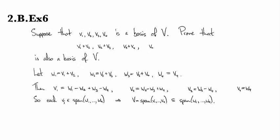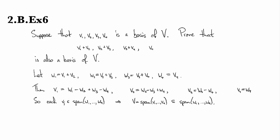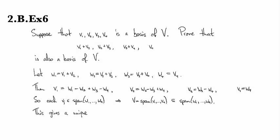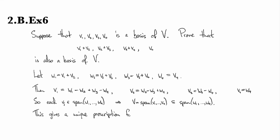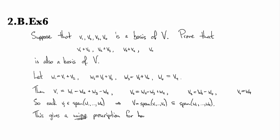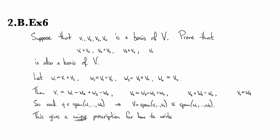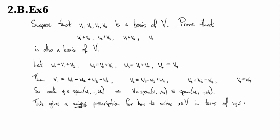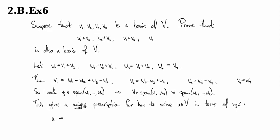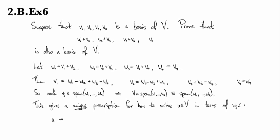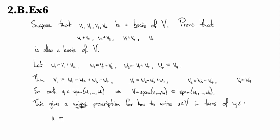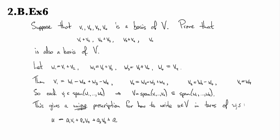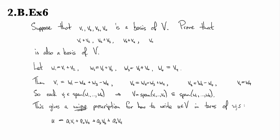Now I just need to see that there's a unique prescription for how to write each U in terms of the WJs. But we have that as well. So if I take U, some element of V, let's pick some element of V. Then I can write it as A1 V1 plus A2 V2 plus A3 V3 plus A4 V4. Because the V's form a basis, that's what was given back at the very beginning.